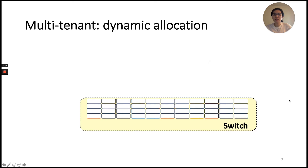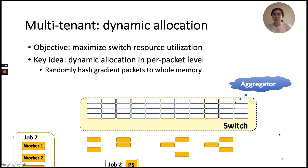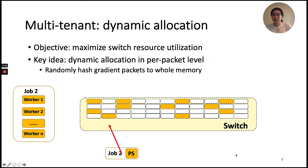To support multiple jobs running simultaneously while maximizing switch resource utilization, ATP dynamically allocates switch memory at the per-packet level. The switch allocates a set of memory units — called aggregators — when the switch program is loaded. The aggregator is the computation unit where aggregation happens. Gradient packets sent from workers occupy the switch by randomly hashing to the whole memory pool. Workers hash a gradient index to identify an aggregator at the switch. If it is available, the switch stores the gradient packet and aggregates incoming gradients from all workers. When it receives the last gradient, it sends the aggregation result to the PS. The PS then sends the parameter packet back to the switch, which frees the aggregator and multicasts the results to all workers.